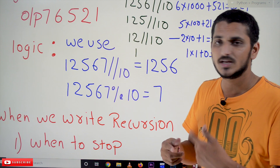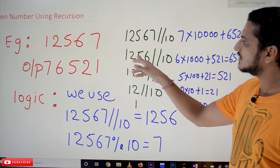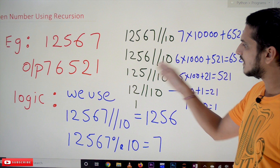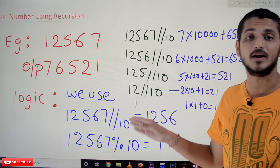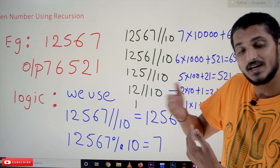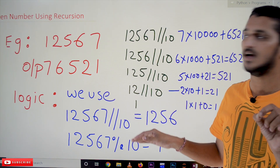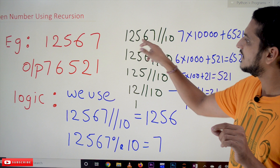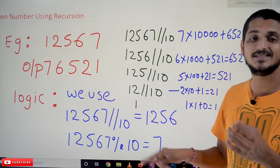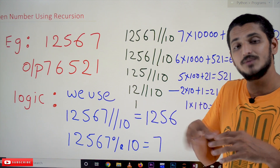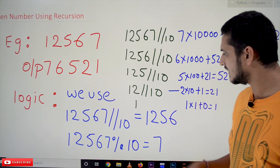So using these two concepts: 12567 floor division 10 gives 1256, floor division 10 gives 125, floor division 10 gives 12, floor division 10 gives 1. We keep floor dividing our number until we get a single digit — from 5 digits down to 4, 3, 2, and finally a single digit.